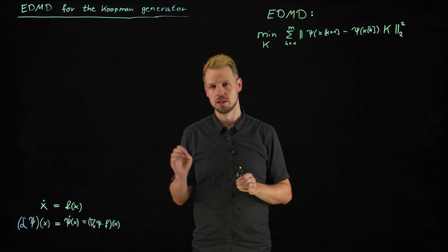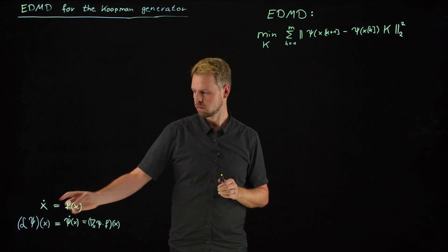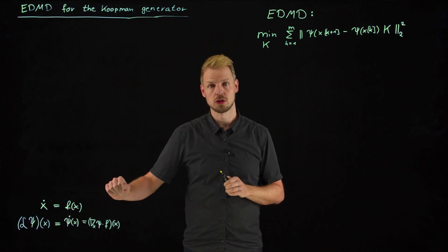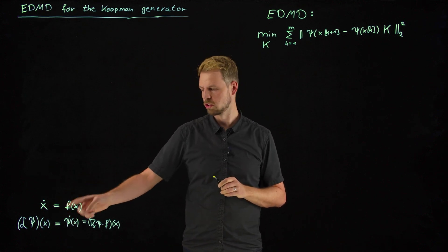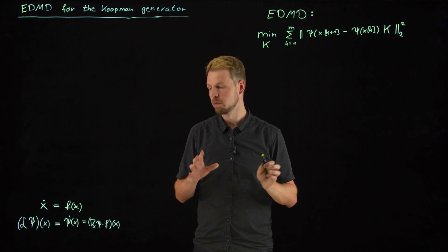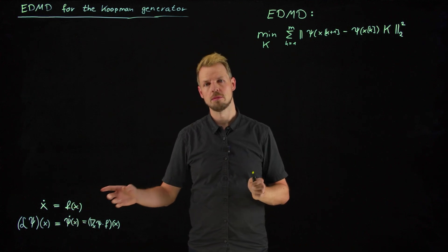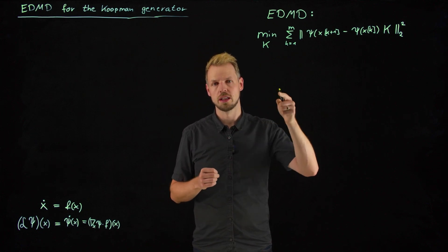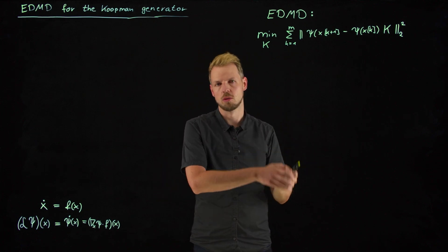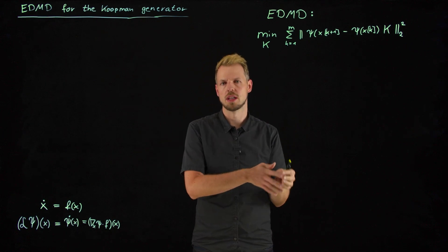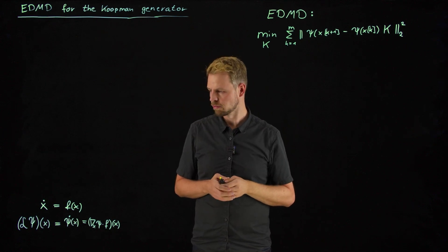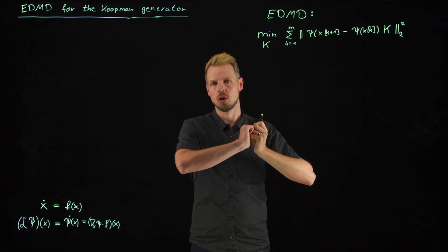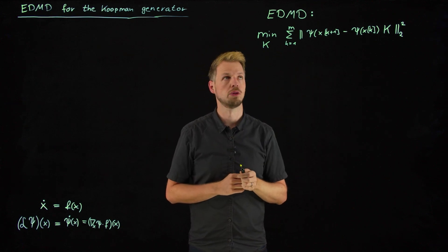And we have seen also that the Koopman eigenvalues are the same and the Koopman eigenfunctions or the generator eigenfunctions are also the same. Or let me rephrase this. The eigenfunctions are the same. The eigenvalues are strongly related also by taking the log or exponentiating, depending on whether we go from discrete time to continuous time or vice versa. And so what we would like to show now is that it is very easy to also approximate the generator from data.